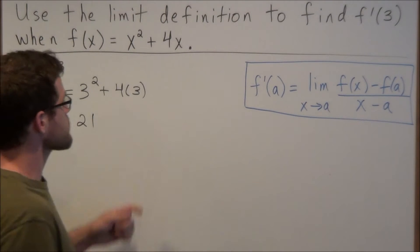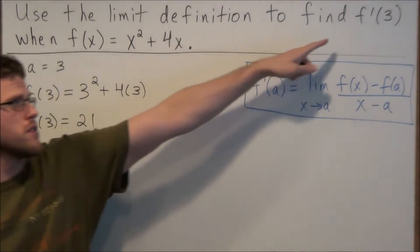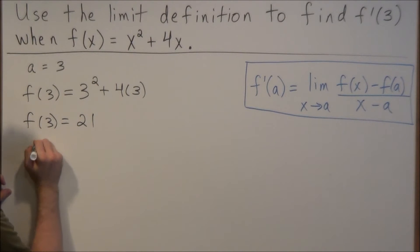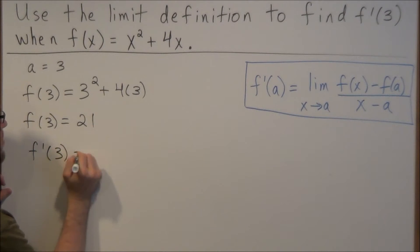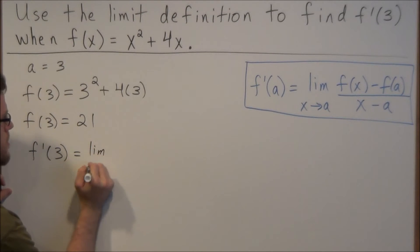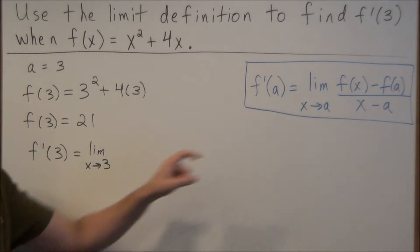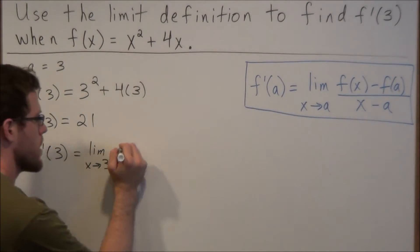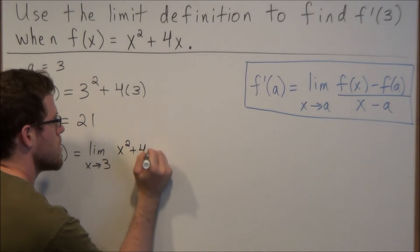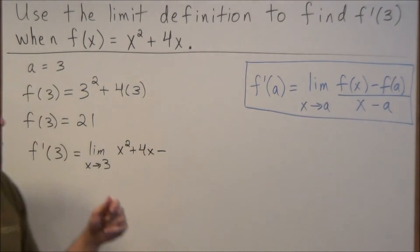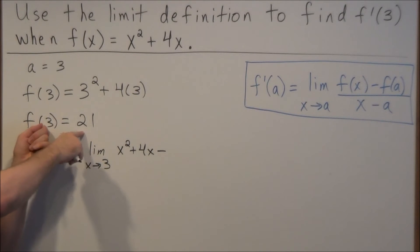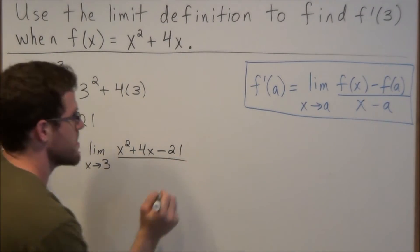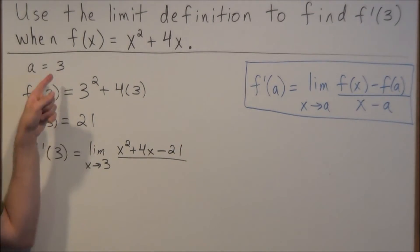So basically, for this function, we want to find the derivative at x equals 3. Applying the definition, we have f prime of 3 equals the limit as x approaches 3. We're replacing a with 3. f of x is the function we were given: x squared plus 4x, minus f of a. Since f of 3 equals 21, we subtract 21 and divide by x minus a, so x minus 3.